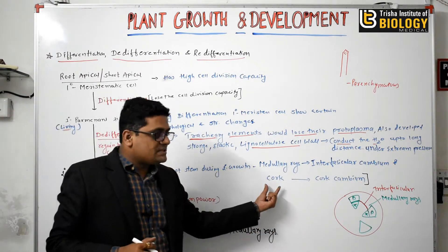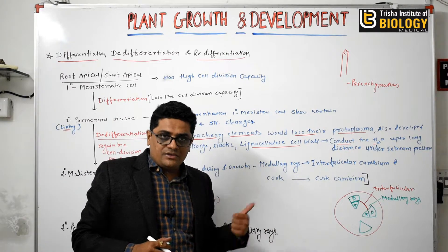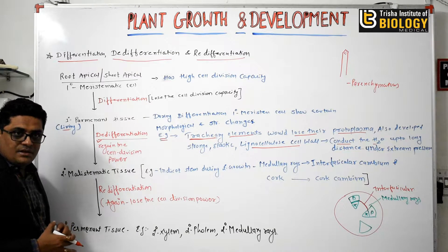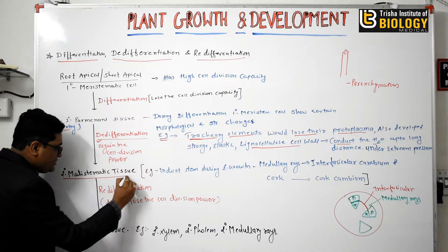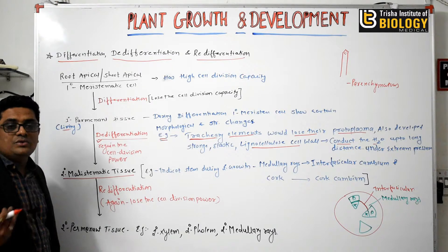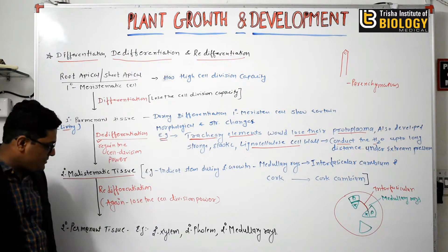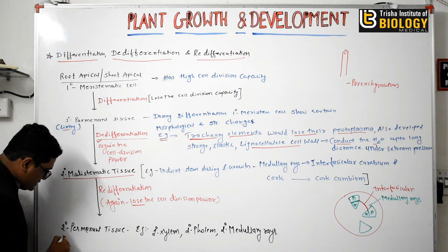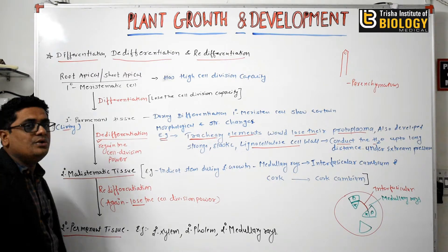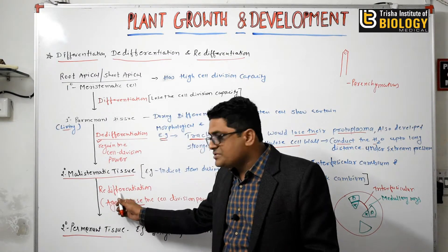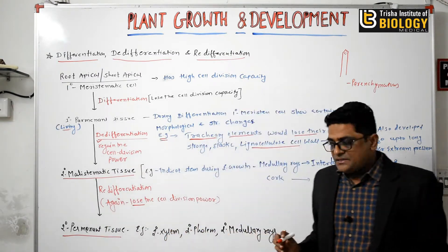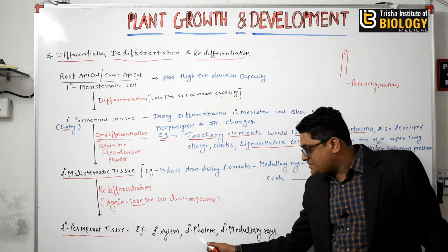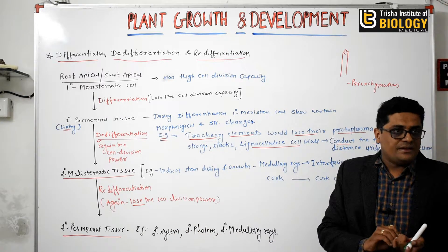Similarly, cork cells convert into the cork cambium — this is also the process of de-differentiation. Now, once the secondary meristematic tissue again loses its cell division capacity and is converted into secondary permanent tissue, this is known as re-differentiation. Examples of secondary permanent tissue are secondary xylem, secondary phloem, and secondary medullary rays.